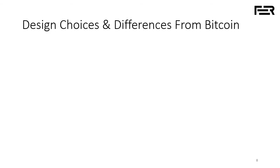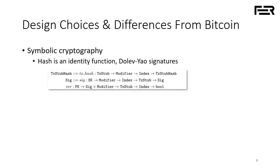Before going into technical details of the model, let's briefly discuss some design choices and how our model differs from the real thing. First, we use symbolic cryptography — a standard simplifying assumption. For us, hashing is just an identity function, and by that trick we greatly simplify referencing inside the blockchain. We also use Dolev-Yao signatures: basically, a signature will verify on a particular message using a particular public key only if the signature was explicitly constructed using the corresponding private key and exactly the same message.